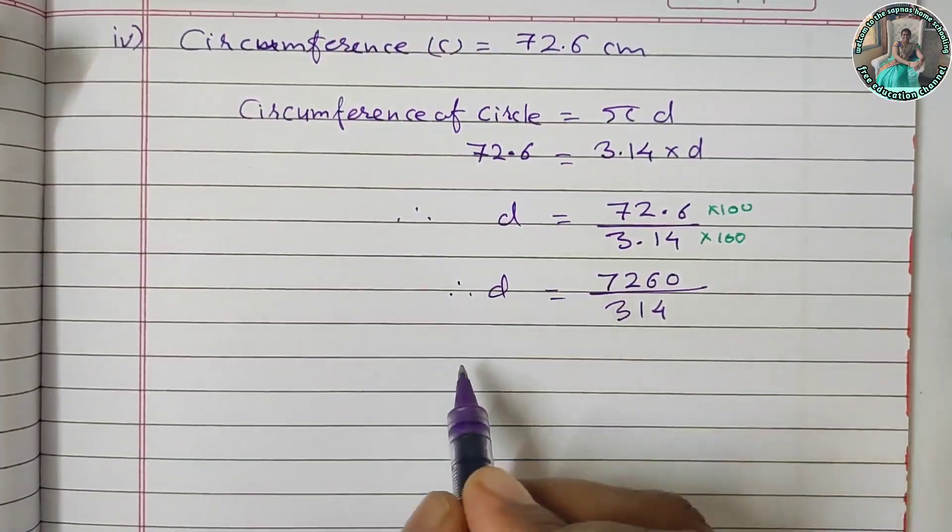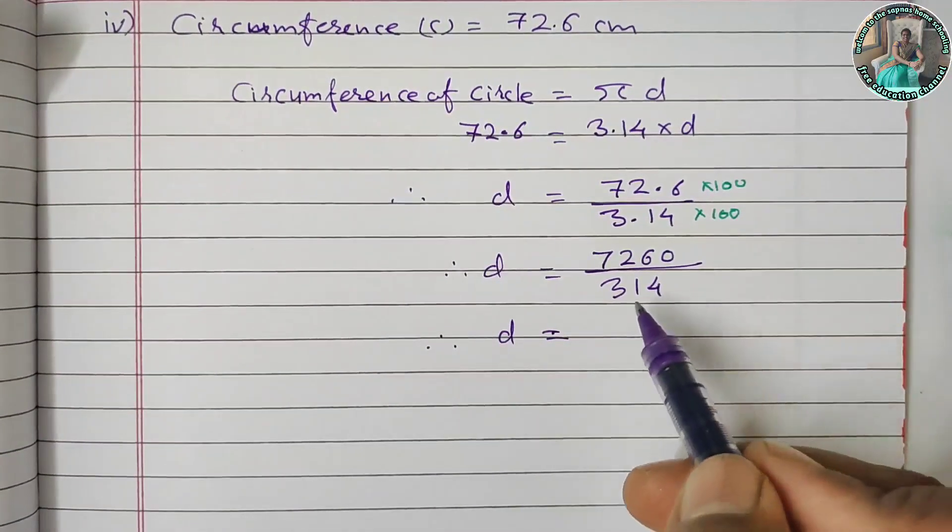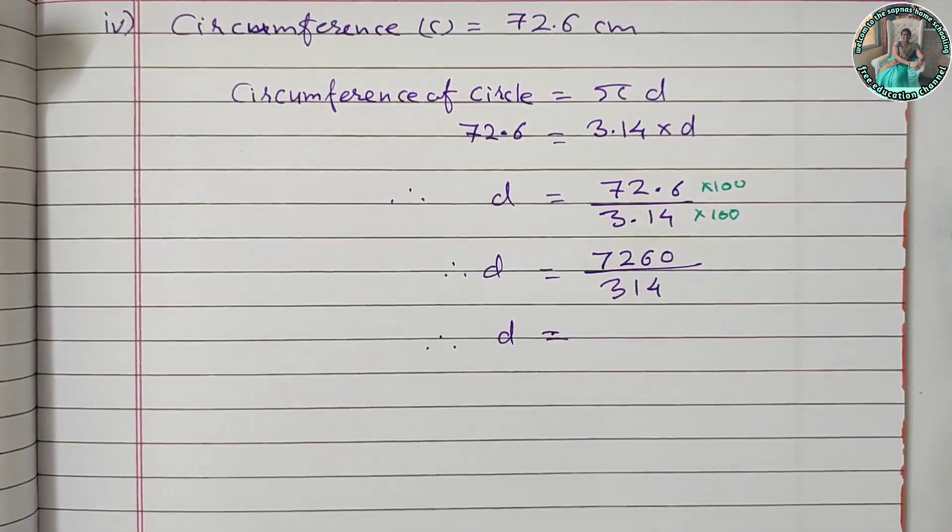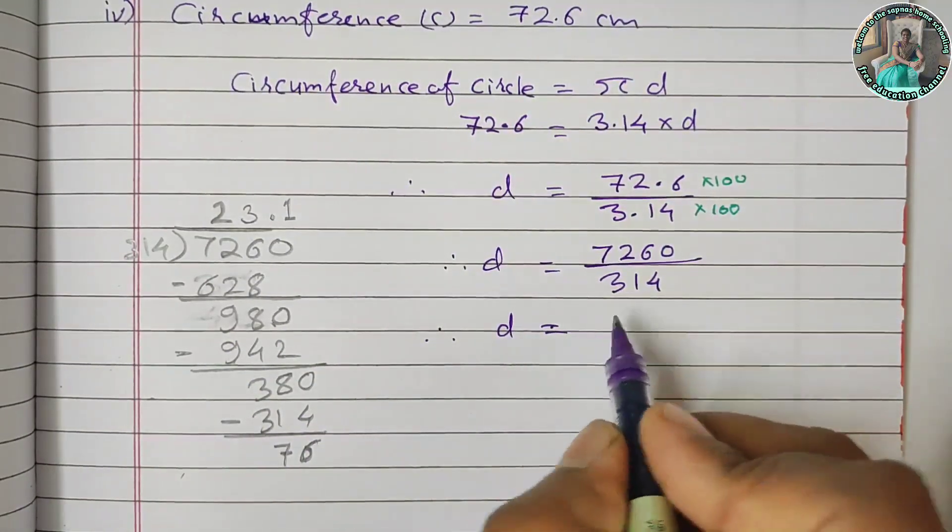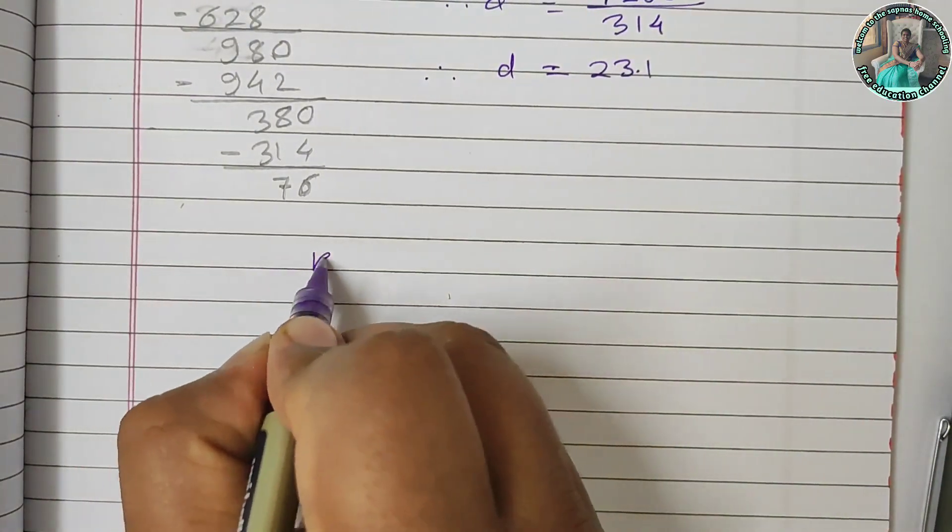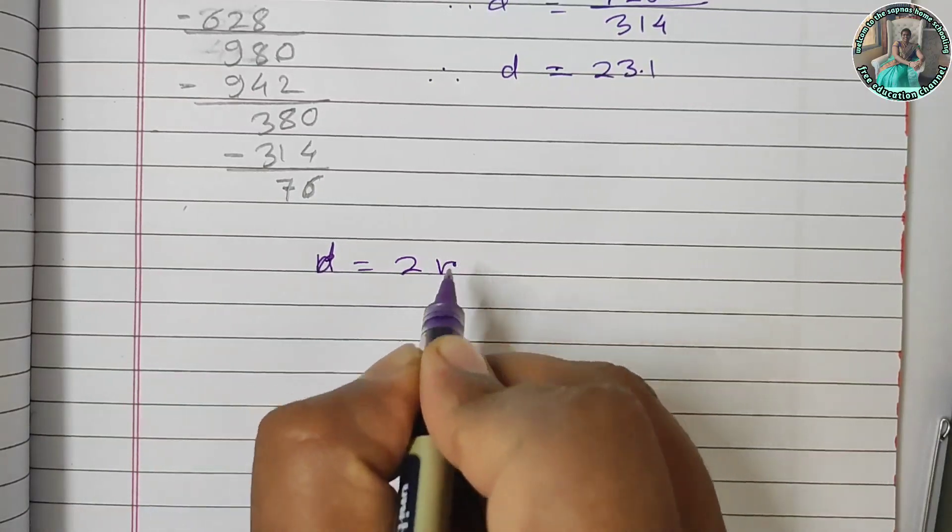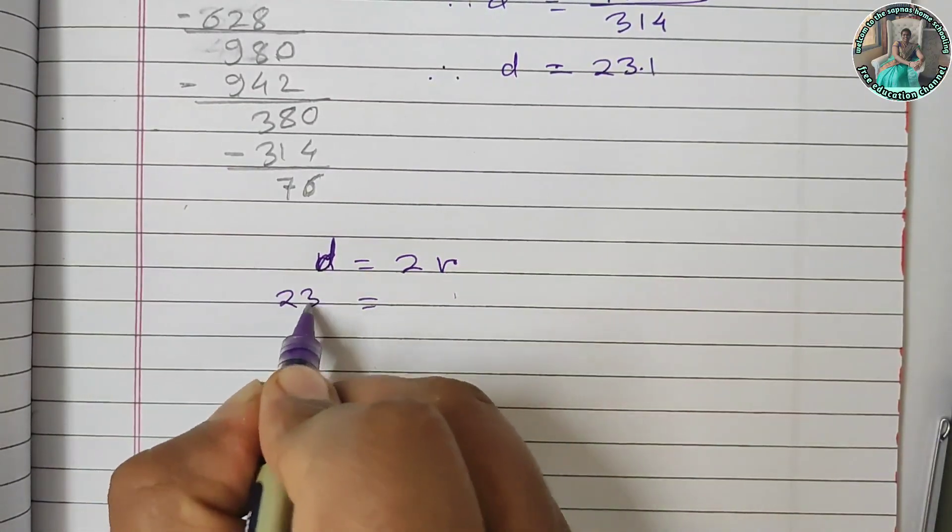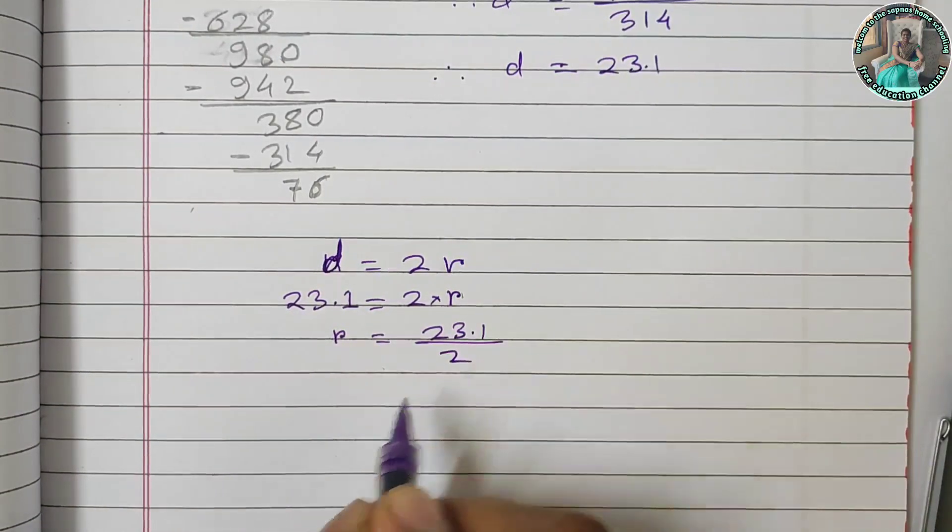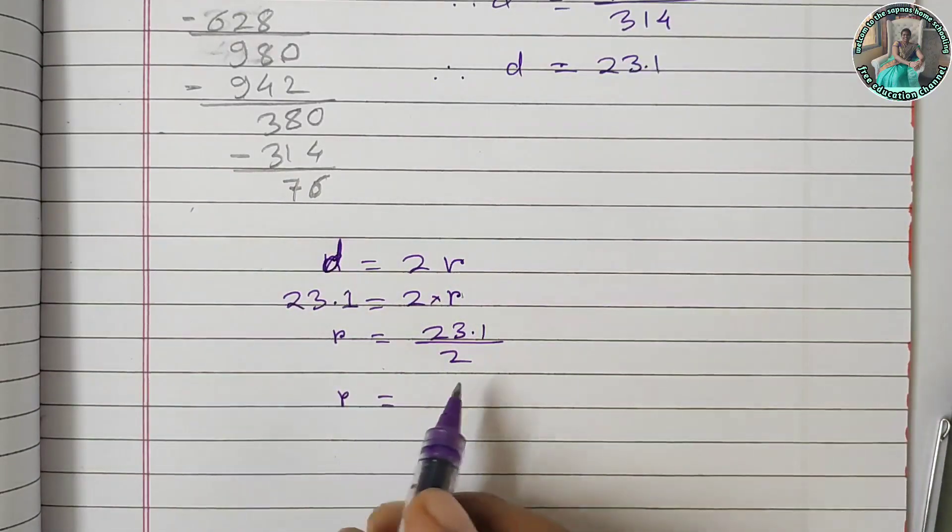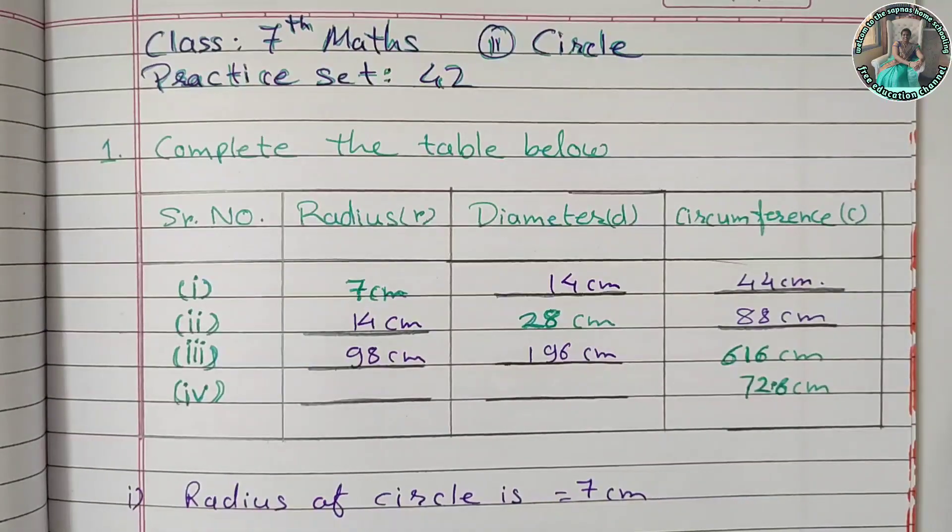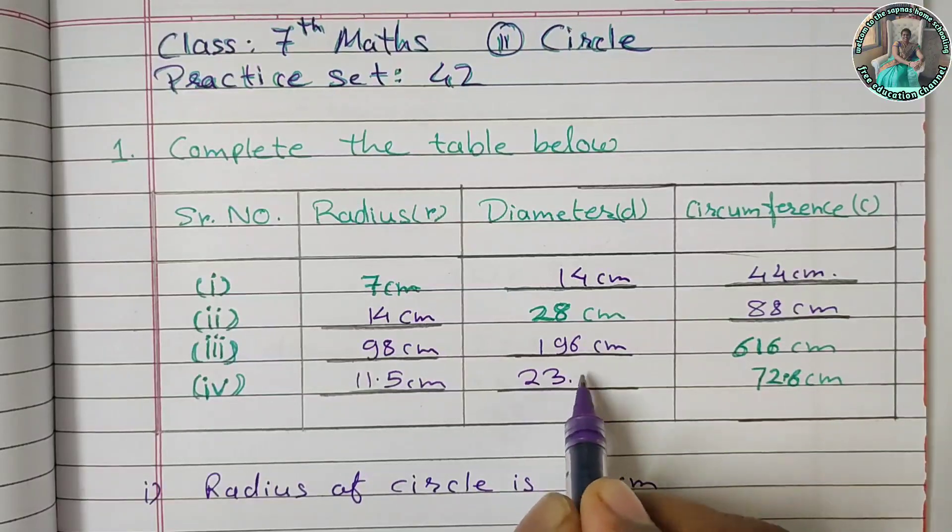We can calculate the d value. 7260 divided by 314 equals 23.1 cm. For radius, the formula is d equals 2R, so 23.1 equals 2 into R. R equals 23.1 upon 2, which equals 11.5 cm. We fill up the answers in the chart: 11.5 cm radius and 23.1 cm diameter.